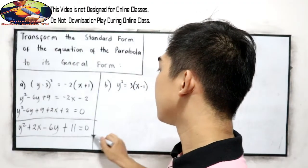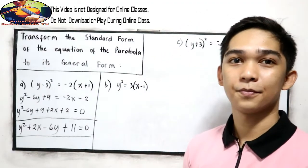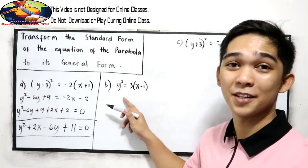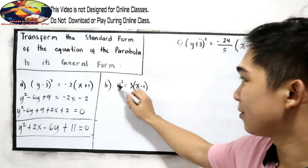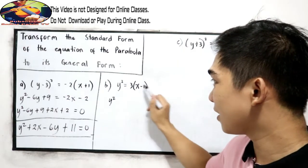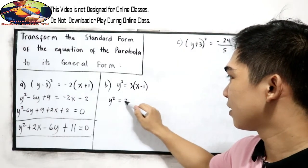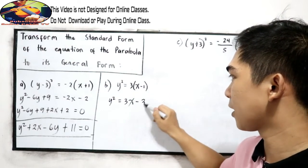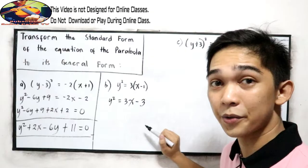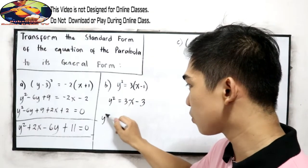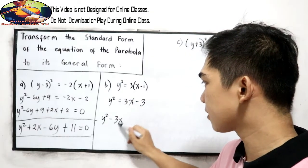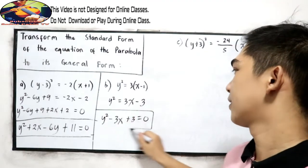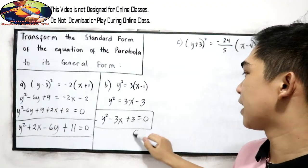That would be our general form for letter A. For letter B, just copy y squared, then distribute: 3 times x is 3x, and 3 times negative 1 is negative 3. Equate to 0, so we have y squared minus 3x plus 3 is equal to 0. This will be our general form.